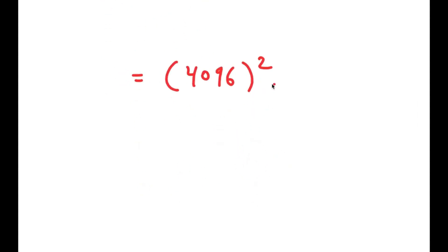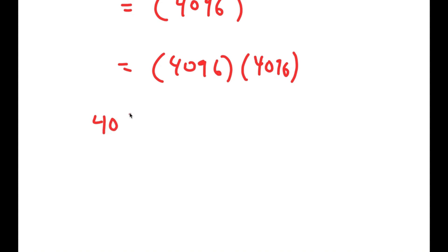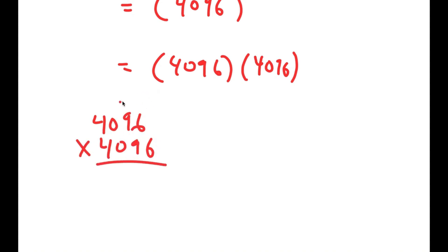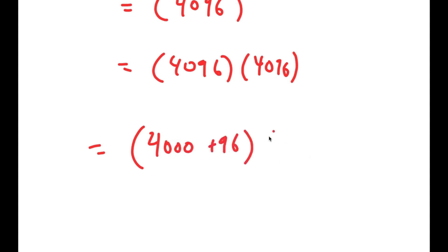Now, 4,096 squared is the same thing as 4,096 times 4,096. What most people would do is multiply this using the conventional method, but that takes too long and it's easy to make an error. So instead, to more easily solve this, I'm going to write this as 4,000 plus 96 times 4,000 plus 96.